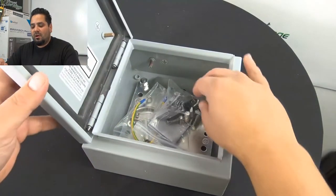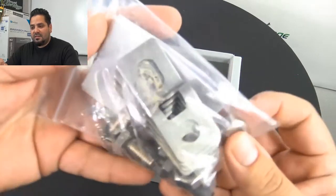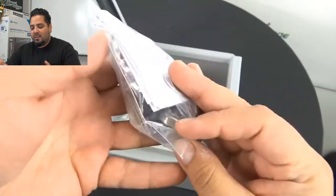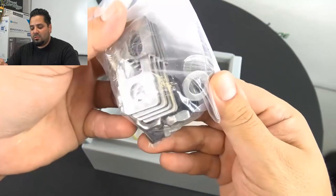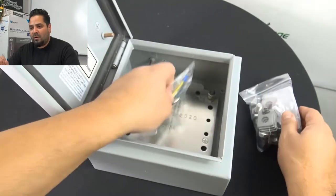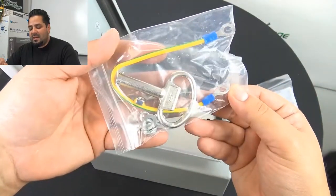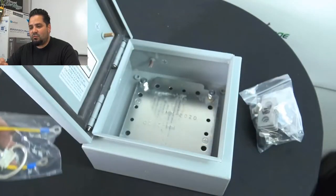As you crack it open, it does include some hardware. Now this is a UL listed box, type 1, type 2, type 4, type 4x, and 12. It also has an IP65 and IP66 rating.